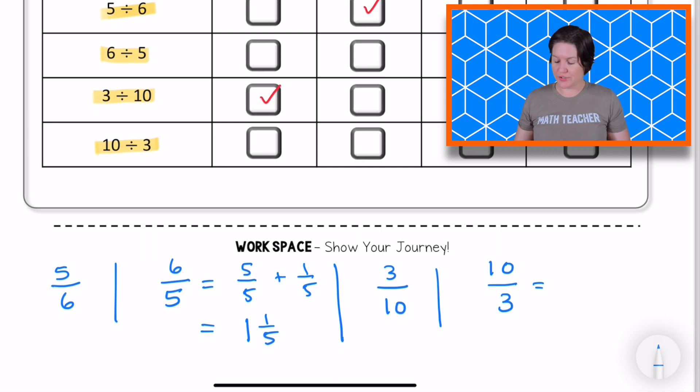So 10 thirds could be decomposed as three thirds plus three thirds, that would be six thirds, plus three thirds would be nine thirds, plus one third. There we go. So three thirds plus three thirds plus three thirds plus one third does equal 10 thirds.